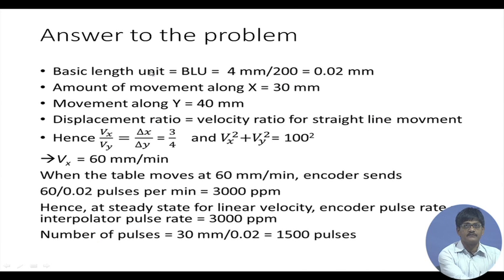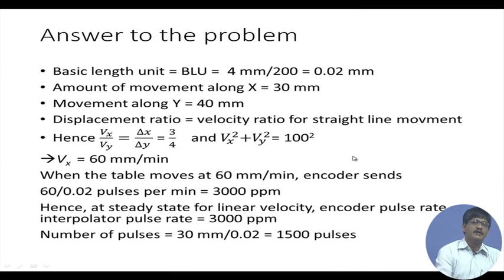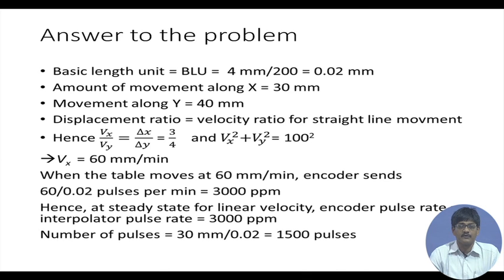The basic length unit equals lead screw pitch divided by encoder hole count: BLU = 4 mm / 200 = 0.02 mm (20 microns). Movement along X is 30 mm and along Y is 40 mm. For linear motion, the displacement ratio equals the velocity ratio: Vx/Vy = ΔX/ΔY = 30/40 = 3/4.